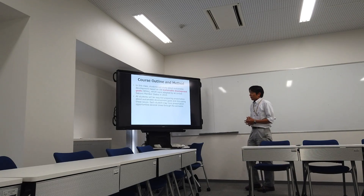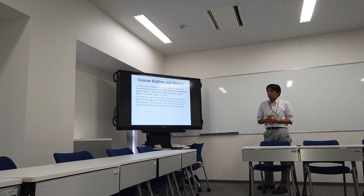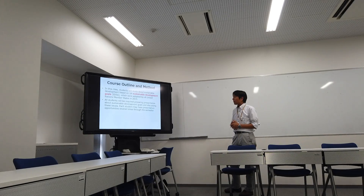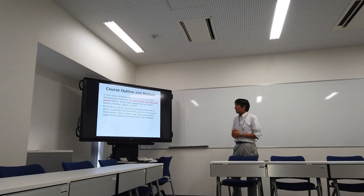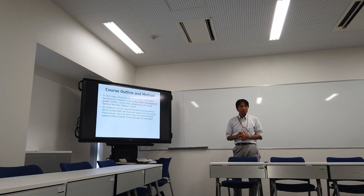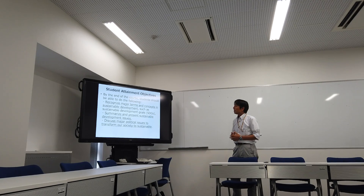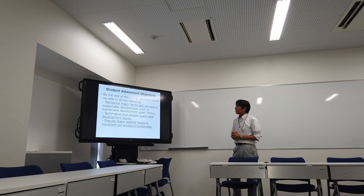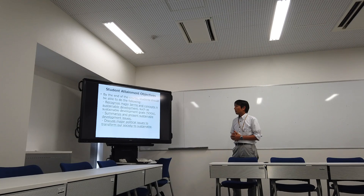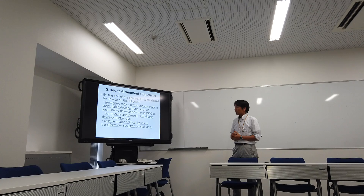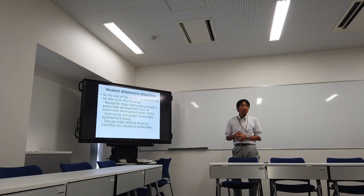In this class, all students will be required to prepare a presentation of some of the course content and discuss these issues. Each student will have a presentation at a particular time. The student's attainment objectives are shown here. By the end of the course, students should be able to recognize major talents and concepts in sustainable development, such as SDGs, summarize and present sustainable development issues, and discuss major political issues to transform our society. That is the role of this class.